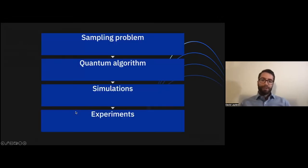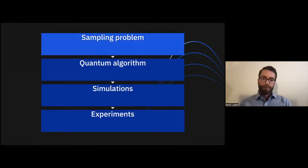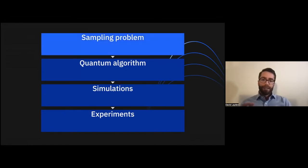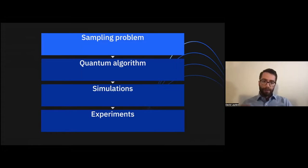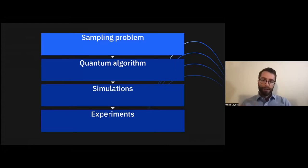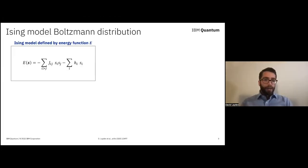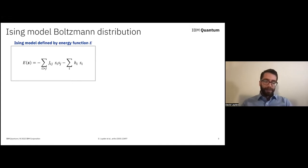For today, I'd like to start by introducing this sampling problem and the classical algorithms that are currently used to solve it. This will naturally lead into our quantum algorithm, which we'll evaluate using both simulations and experiments. I'd like to start by diving in and getting some math out of the way, and then taking a step back in a minute for broader context.